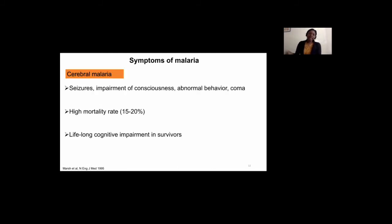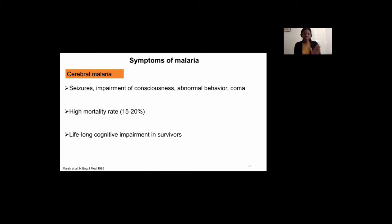Cerebral malaria is the neurological complication of the disease. It is characterized by seizures, impaired consciousness, abnormal behavior, and coma. The mortality rate in children is quite high — between 15 to 20 percent. This is a pathology that affects the brain, and in cases of brain swelling, the death rate even increases. For children who survive it, some are left with lifelong cognitive impairment, learning disabilities, and mental health issues.